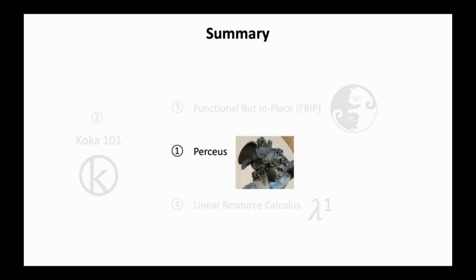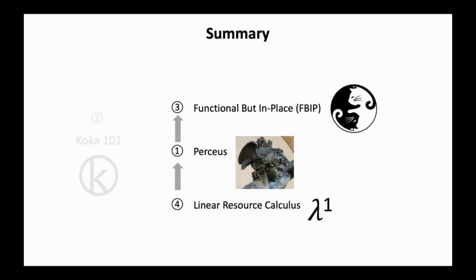So, in summary, in the first part of the talk, we have introduced Perceus, which does precise reference counting with reuse and specialization. On top of it, we show how we can use a new programming paradigm, FBIP, which stands for functional but in place, so you get the best of both worlds. And Perceus is really built on top of a linear resource calculus, lambda 1. And all these are implemented in the COCA programming language.